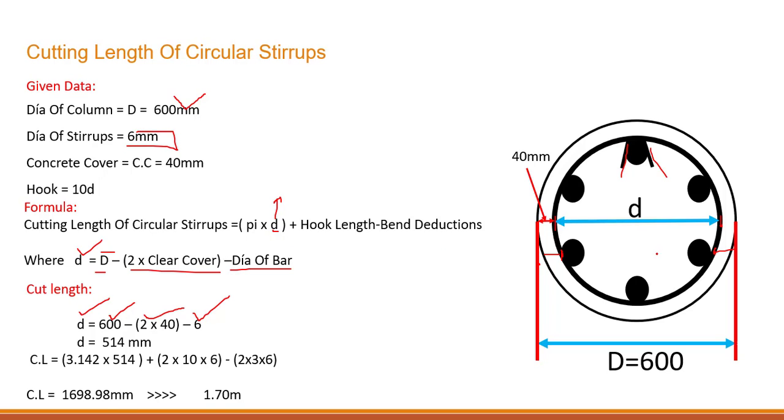So 3 mm at one end and 3 mm at one end will make 6 mm. So D will be equal to 514 mm. You can just check these calculations as well, no problem.